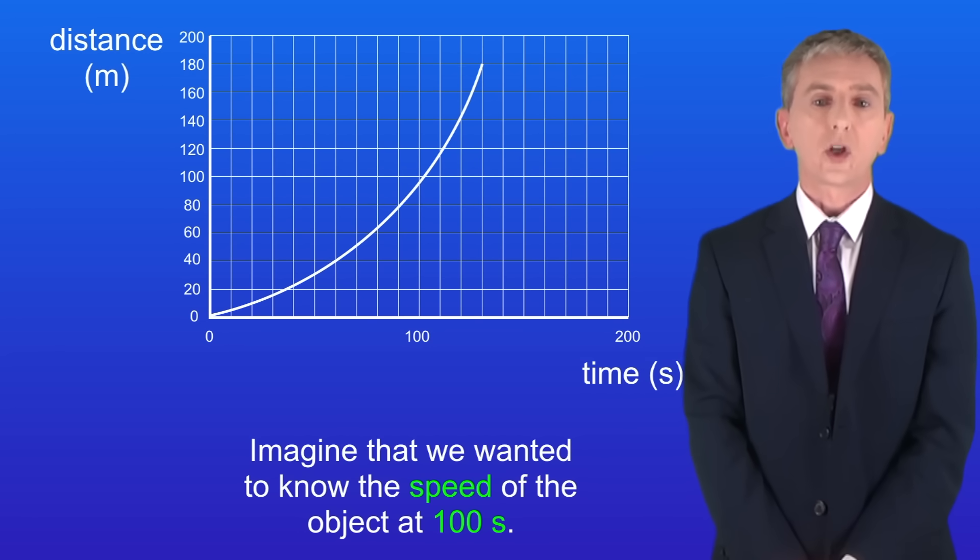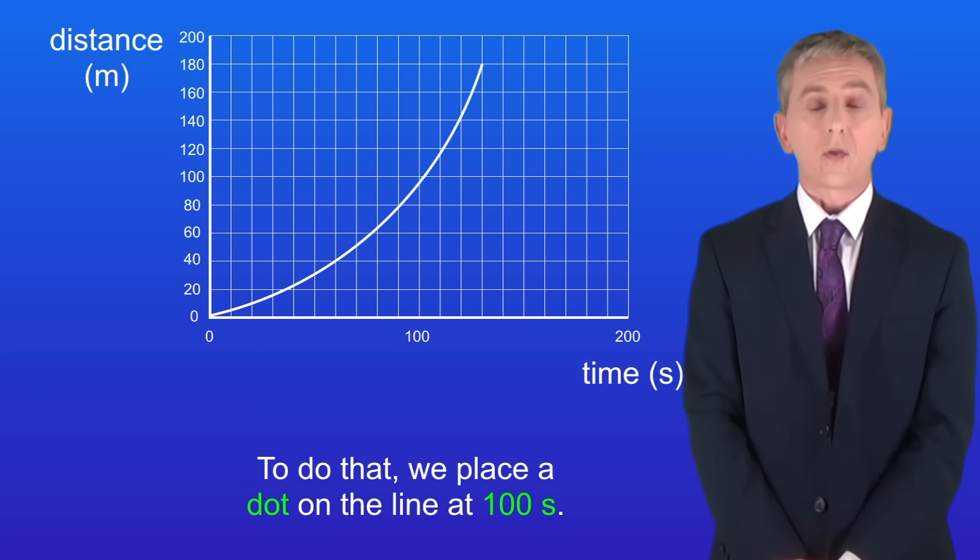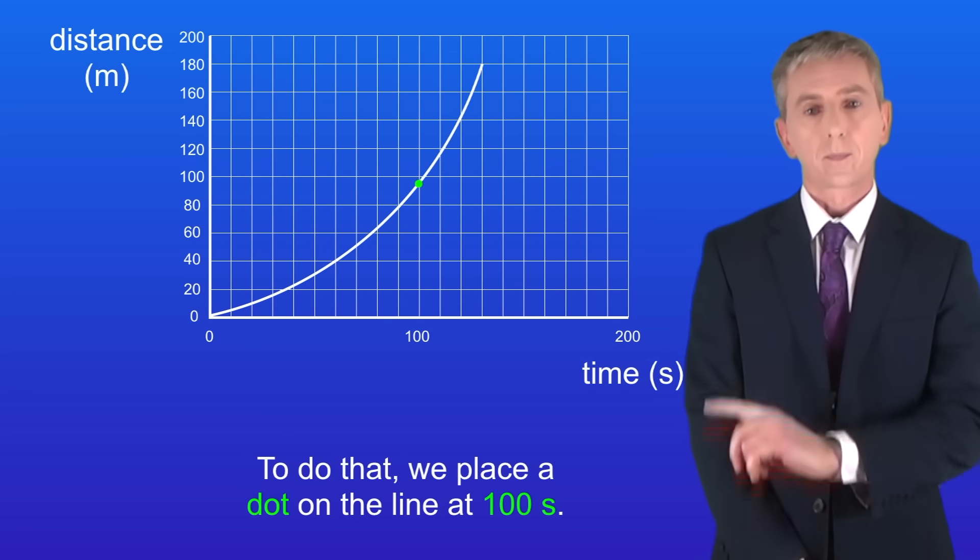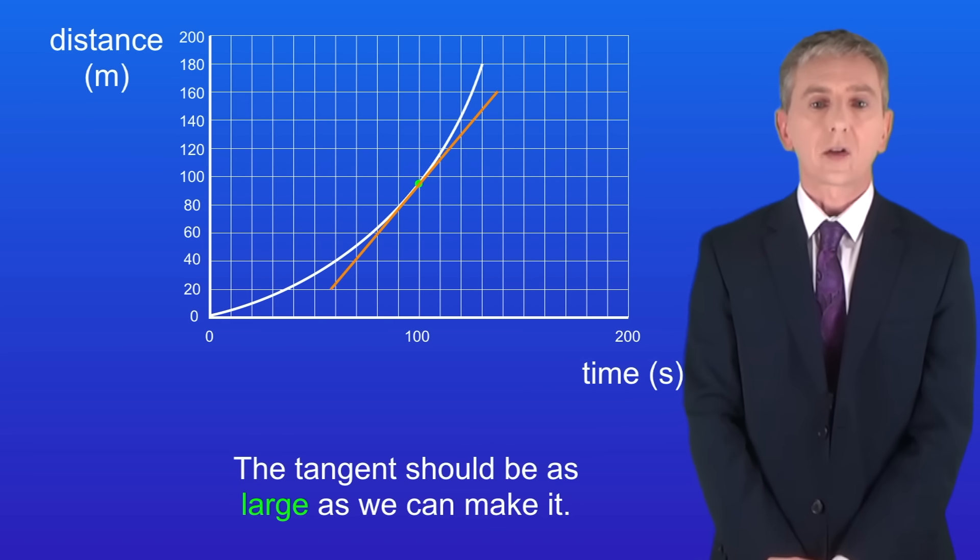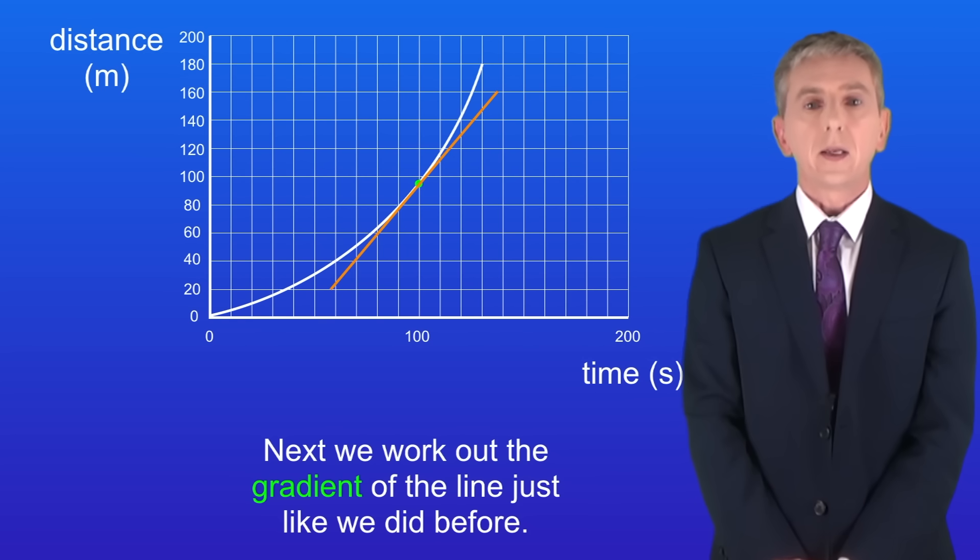Imagine that we wanted to know the speed of the object at 100 seconds. To do that we place a dot on the line at 100 seconds like this. We then draw a tangent to the line. The tangent should be as large as we can make it. Next we work out the gradient of the line just like we did before.